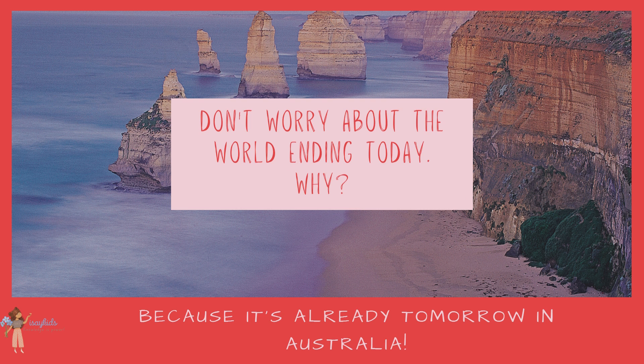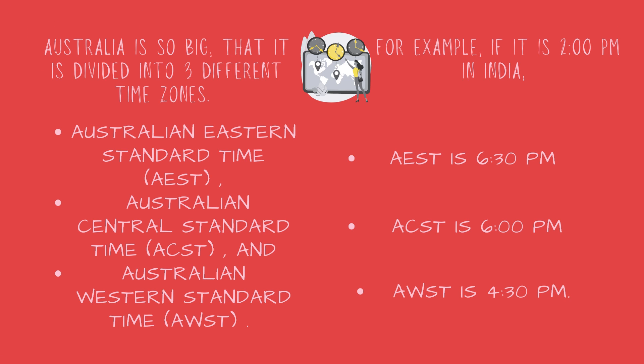They say, don't worry about the world ending today. But why? Because it's already tomorrow in Australia! Australia is so big that it is divided into three different time zones: Australian Eastern Standard Time, Australian Central Standard Time and Australian Western Standard Time.